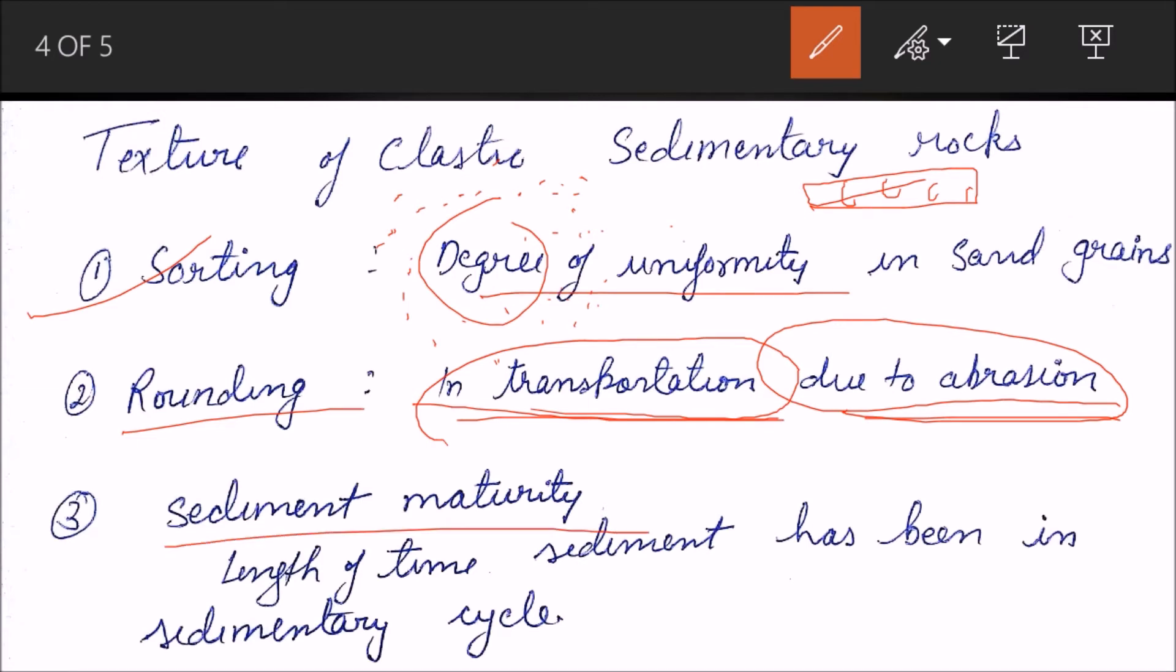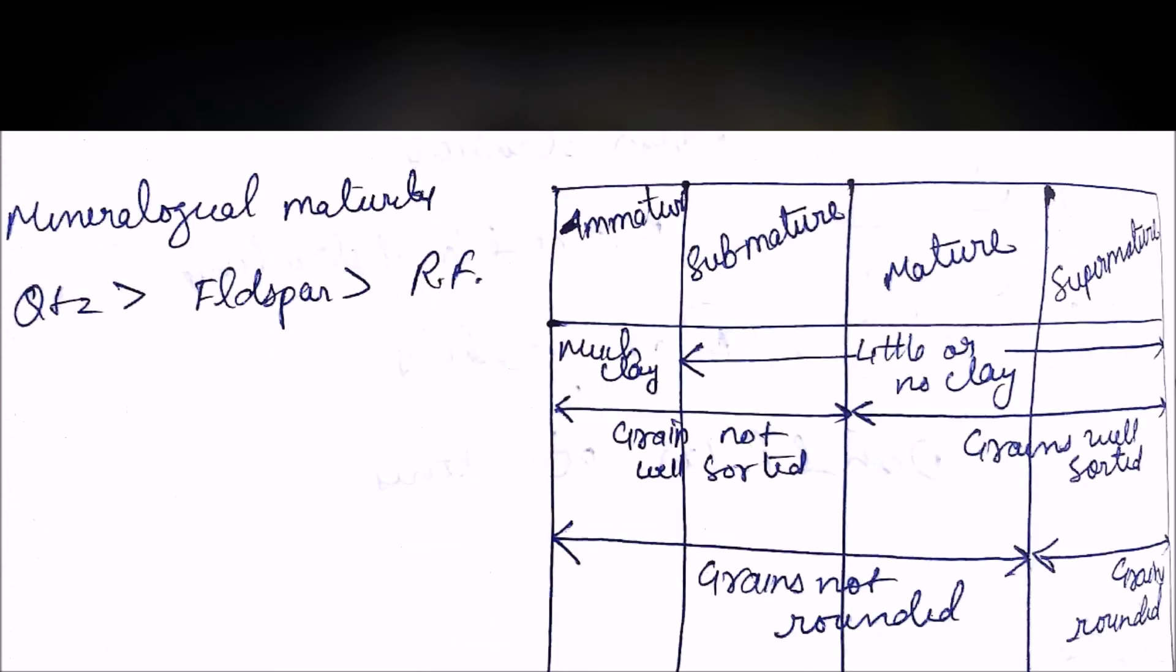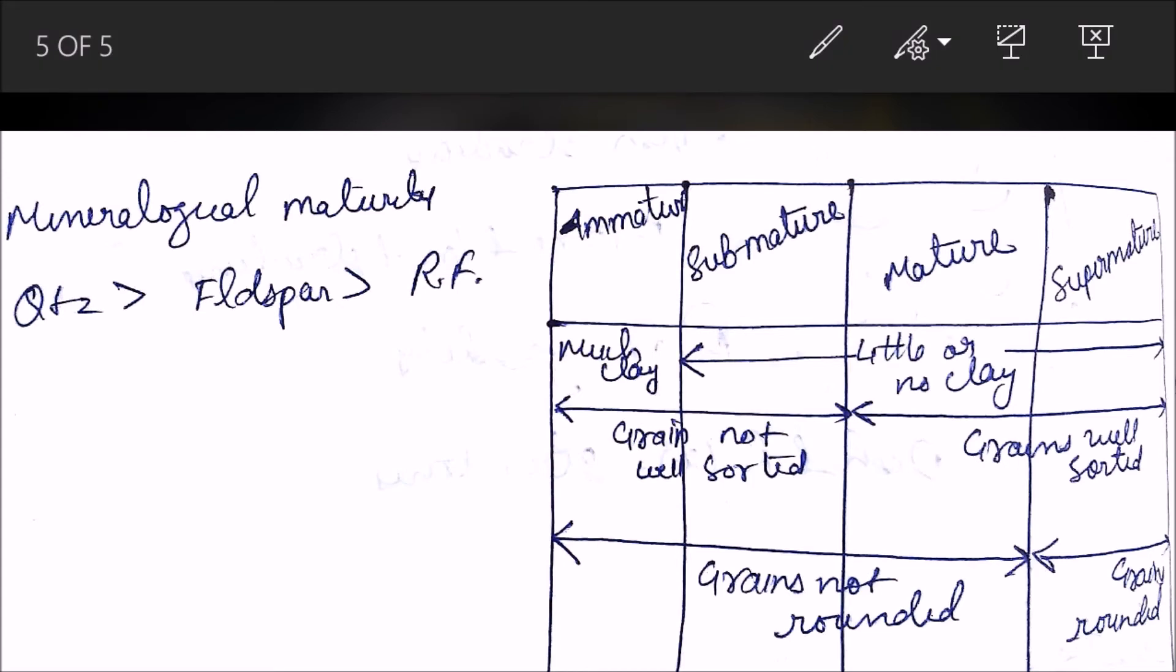And maturity. Deriving from these two is the maturity of a sediment. That means the length of time it has been in the sedimentary cycle. More mature is the grain which has spent more time in the sedimentary cycle, from weathering to erosion, transportation, deposition, to lithification.